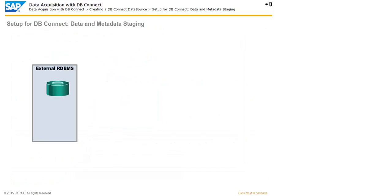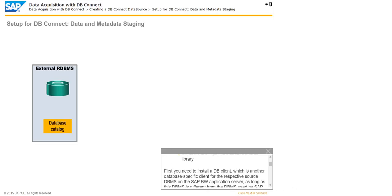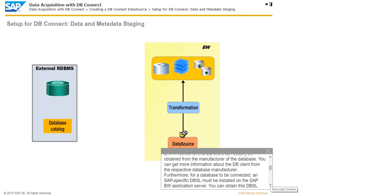Before you can use the dbConnect functions, you must prepare as follows: install the dbclient, and install an SAP-specific database shared library. First, you need to install a dbclient, which is another database-specific client for the respective source DBMS, on the SAP BW application server, as long as this DBMS is different from the DBMS used by SAP BW.